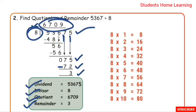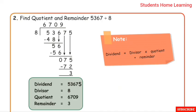Note: Dividend = Divisor × Quotient + Remainder. Multiply the divisor and quotient, then add the remainder — you should get back the dividend.